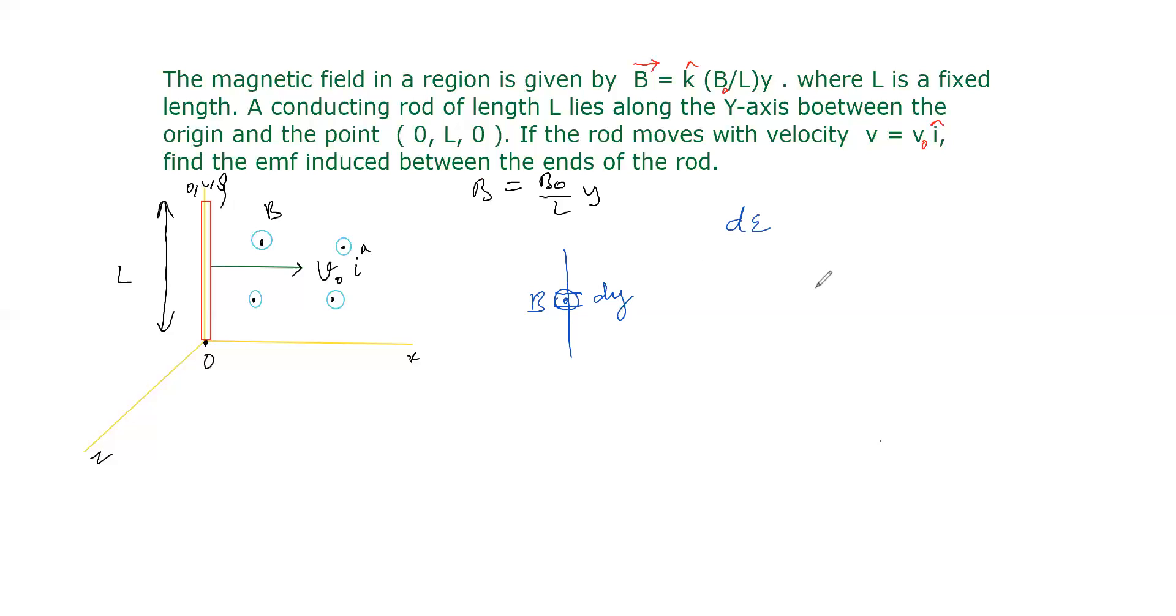Actually, the EMF formula is magnetic field × length of conductor × velocity. These three are vector quantities, so the magnetic field, length, and velocity should be mutually perpendicular to each other. Then only EMF induced is maximum.